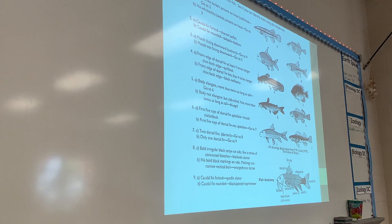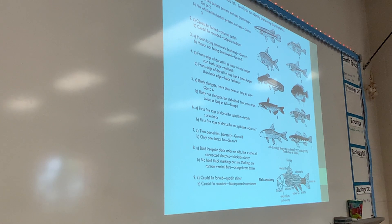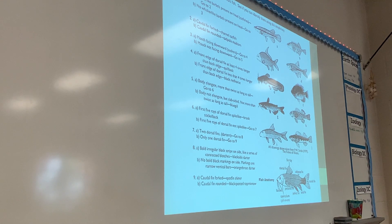Thankfully, we have the internet to help us now. A lot of times you don't even have to use a dichotomous key anymore. My brother showed me an app called Google Lens - it's part of the Google app. You find the Lens button, take a picture of something, and it shows you exactly what it is. I used it on a shoe once. It tells you plants, rocks, all kinds of things. So technology is pretty awesome - you don't even really need a dichotomous key anymore.